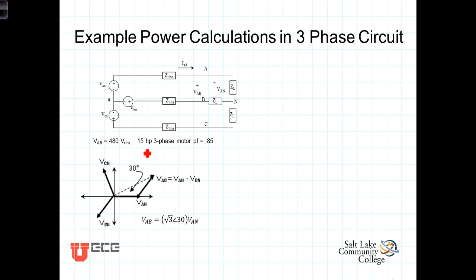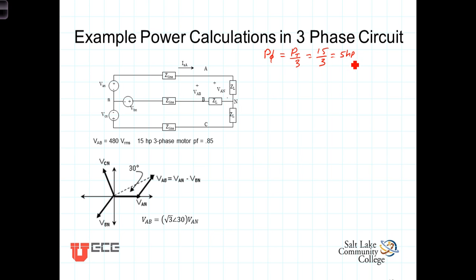In this case, we've got a Y-connected load. We're told that it's a 15-horsepower three-phase motor with a power factor of 0.85. That 15-horsepower is the total power — the rating on a motor is the total power you can get out of the shaft. Because it's a three-phase motor, a third of that power will come from each phase. So the power per phase equals the total power divided by three, which is 15 divided by 3, giving us 5 horsepower per phase, which converts to 3,730 watts per phase.